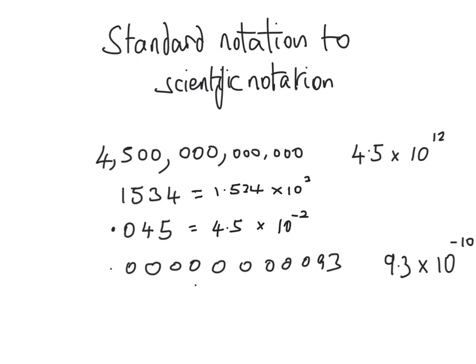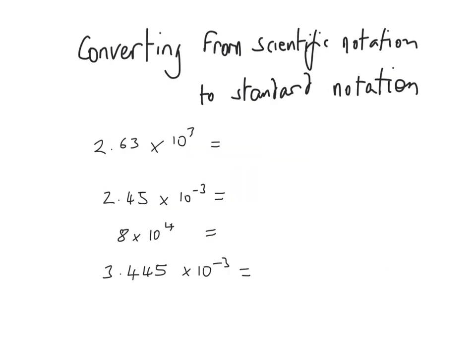Remember, with all of these coefficients the numbers have to be between 1 and 10. If you're getting a number outside that range, you've done something wrong. You can see all of these coefficients are between 1 and 10. Now let's look at how we do the reverse — converting from scientific notation into standard notation. We know this is the first digit and there are going to be three digits after it, so we need to add an extra zero, giving us two thousand six hundred and thirty.